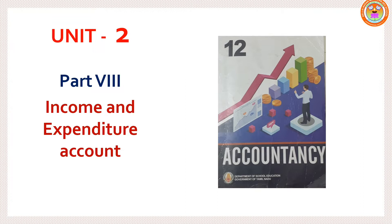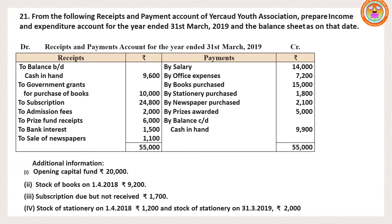Let me read the question. From the following receipts and payment account of Aircard Youth Association, prepare income and expenditure account for the year ended 31st March 2019 and balance sheet as on that date. Details are given with additional information. While reading the question, look at the rules while preparing income and expenditure account.